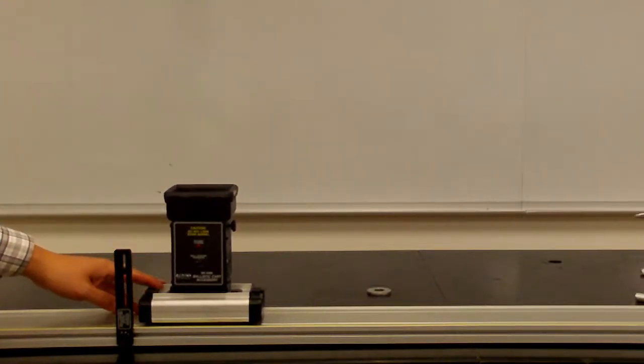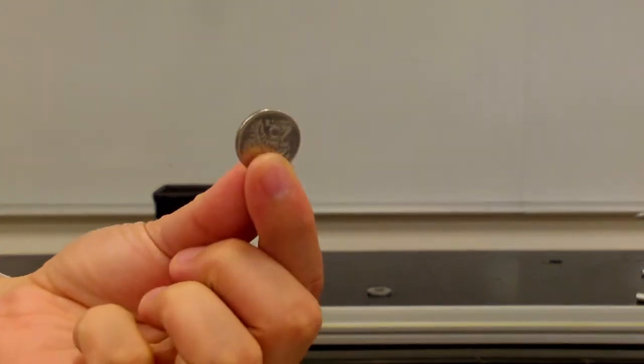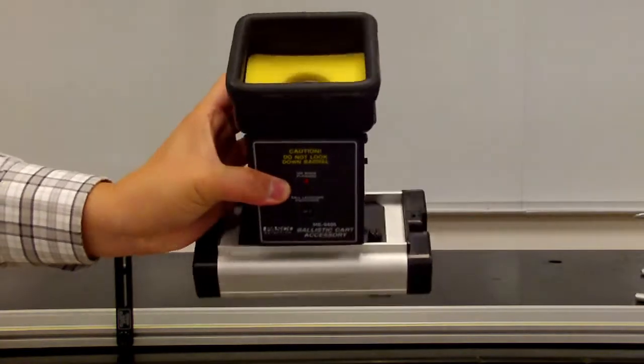So this is the cart and the launcher setup for demonstrating the independence of the horizontal and vertical motion. This is the ball and this is the coin used to trigger the launch manually. And here's the cart and the launcher itself.